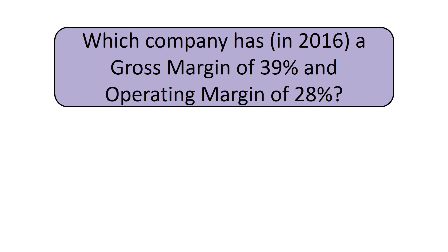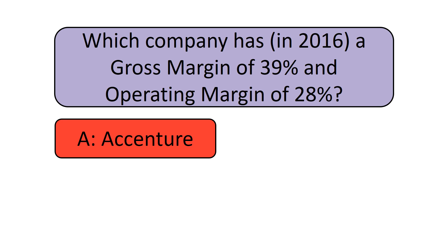Which of these companies has a Gross Margin as a percentage of revenue of 39% and an Operating Margin as a percentage of revenue of 28%? Is it (a) Accenture, a leading global professional services company providing a range of strategy, consulting, digital, technology, and operations services and solutions?